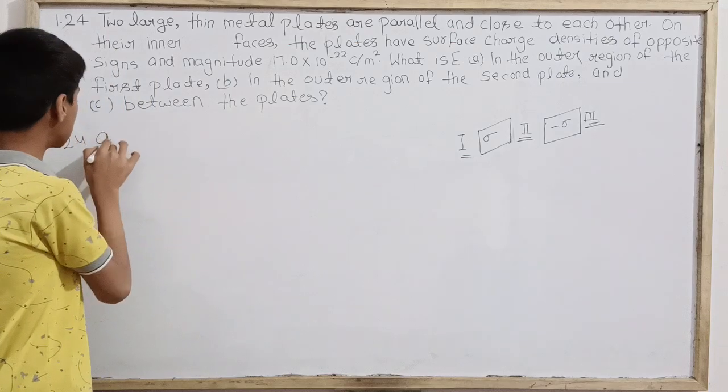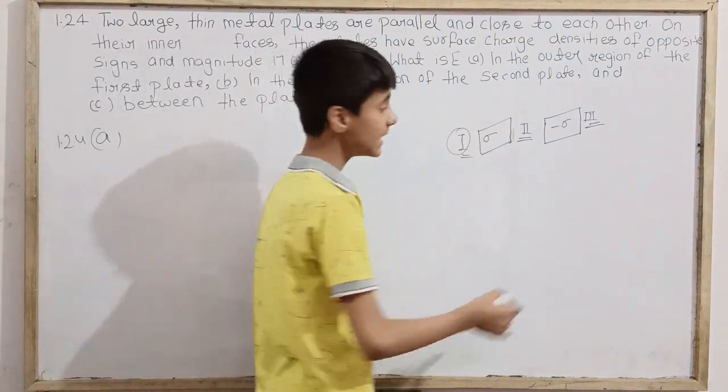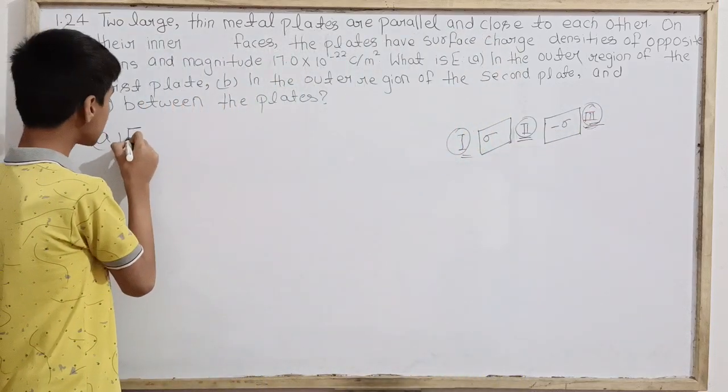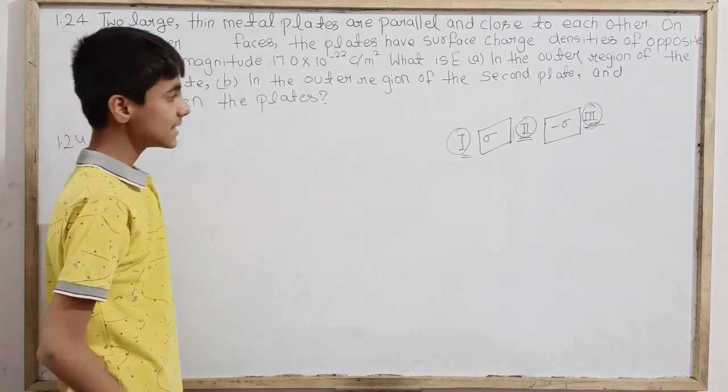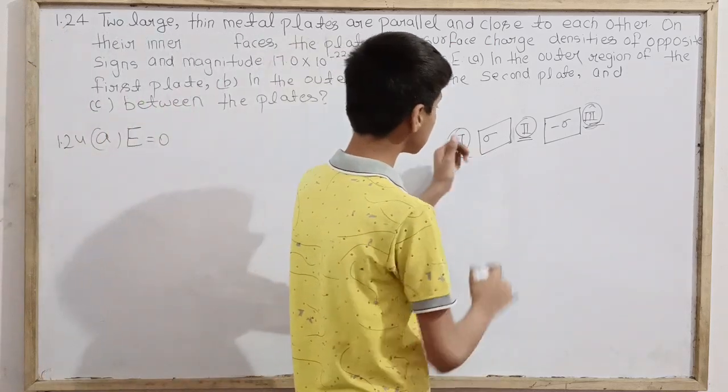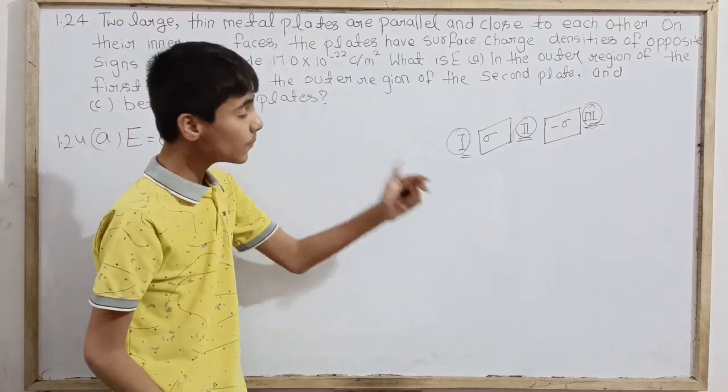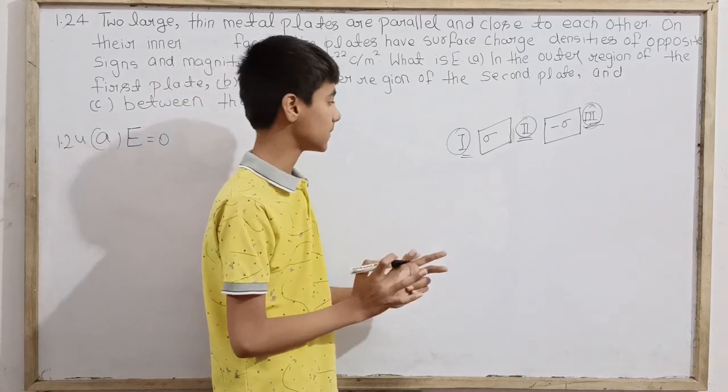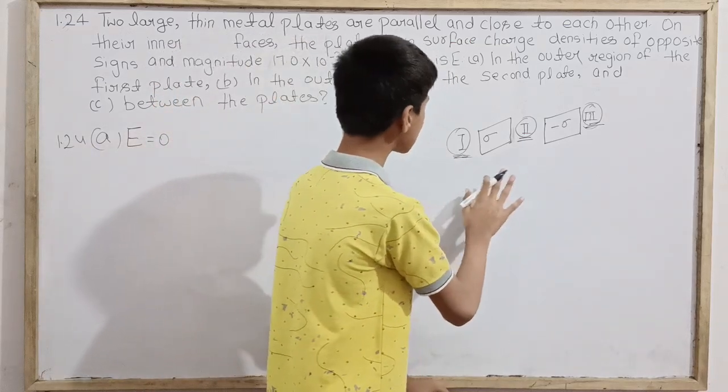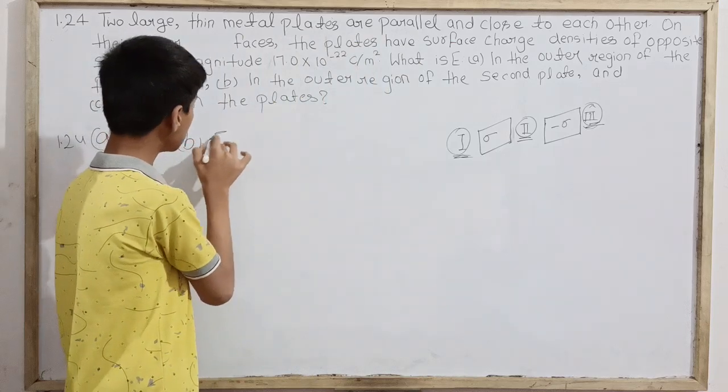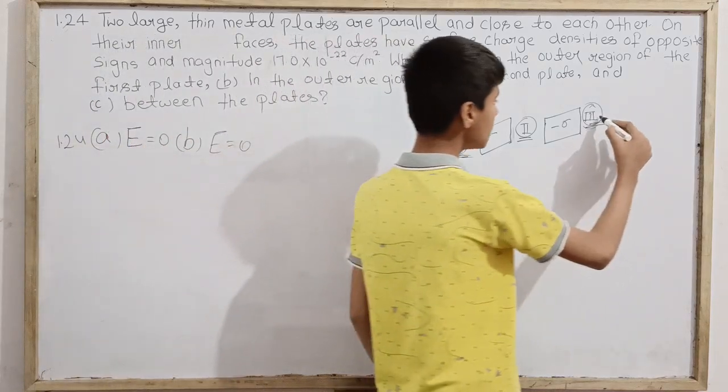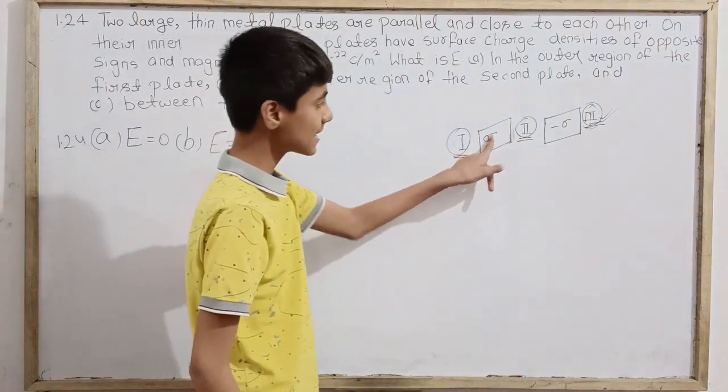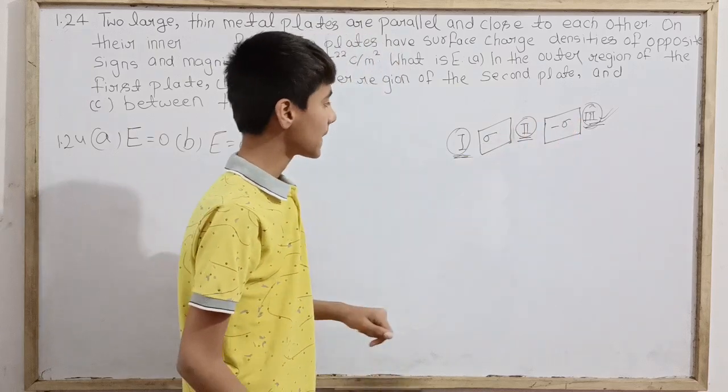For parts A and B in the outer regions, there may be no electric field because there is no enclosed charge. For part C, there will be an electric field because there's an electric field due to both plates.